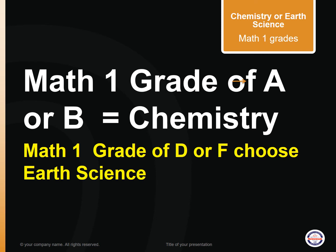In choosing the appropriate science class, you will need to take into consideration your current math class and grade. If you are enrolled in Math 1 and receiving an A or a B, you can select Chemistry next year. If your grade in Math 1 is a D or an F, Earth Science would be the appropriate choice. If you are earning a C in Math 1, you may select Chemistry or Earth Science.